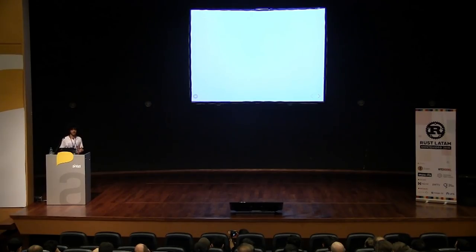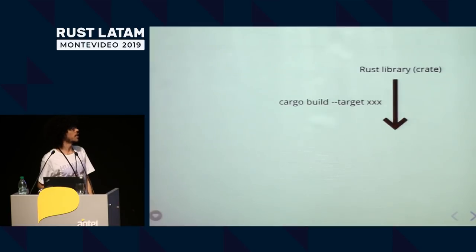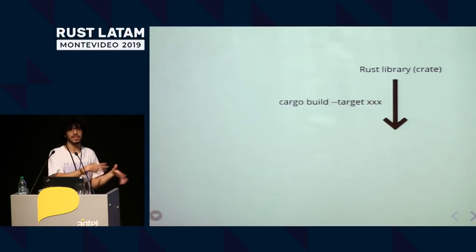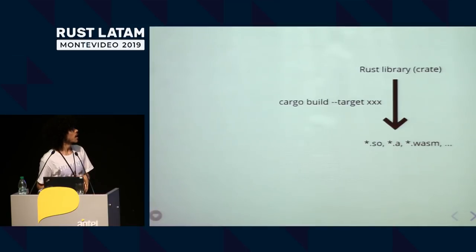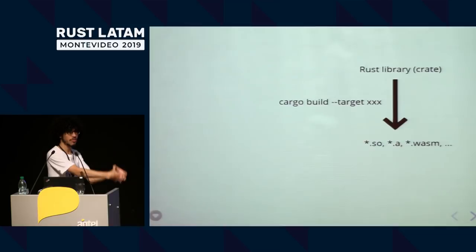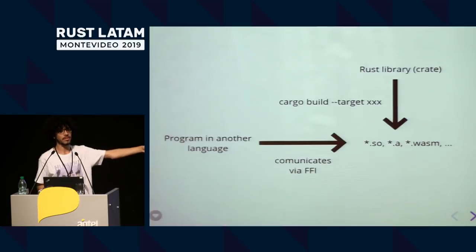How does the workflow look when you're building a library for an external app? You have your Rust library with extern declarations. You build them to the target you want — when you do just `cargo build`, it uses your OS and architecture, but you can use the `--target` flag to build for other platforms. Then you'll get a `.so` or `.a` file depending on the target. This file will contain your externalized functions, and in your program in another language, you consume those functions via FFI.